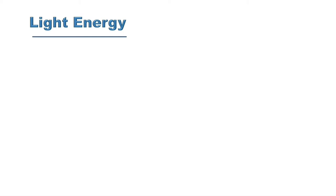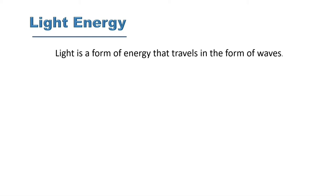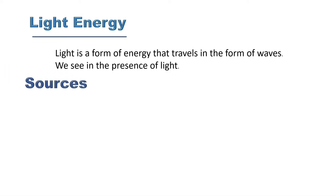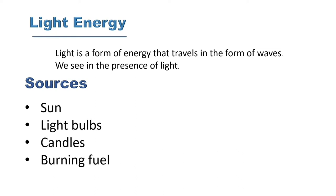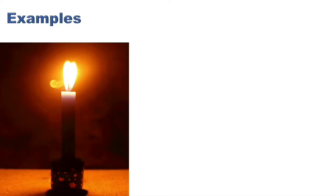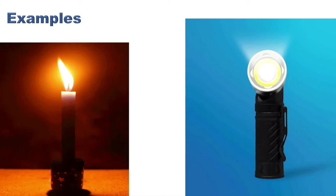Now we will discuss light energy. Light is a form of energy that travels in the form of waves. If there is no light, we cannot see. Sources of light energy include the sun, light bulbs, candles, and burning fuel. Examples from daily life include a burning candle and a torch light, both of which provide light energy. Students, you should also write examples from your own surroundings.